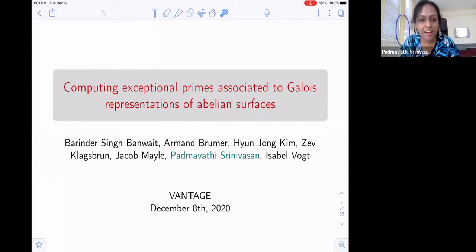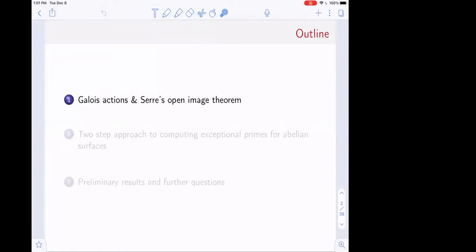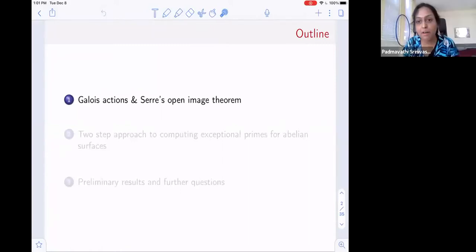My collaborators on this project are Barinder Singh Banwait, Armand Brumer, Hyunjung Kim, Zev Klagsbrun, Jacob Mayle, and Isabel Vogt. We're going to tell you about some Galois representations. To set the context, I should tell you first about Serre's open image theorem.